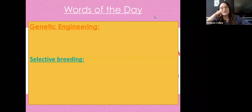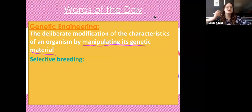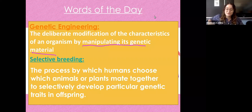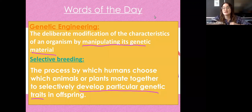Now I've got two words of the day for you. The first is genetic engineering: the deliberate modification of the characteristics of an organism by manipulating its genetic material. Tomorrow we're going to start talking about more specific genetic engineering techniques involving CRISPR and other modern technology. The second word is selective breeding: the process by which humans choose which animals or plants mate together to selectively develop particular genetic traits in offspring. Pause this video and write down those definitions.